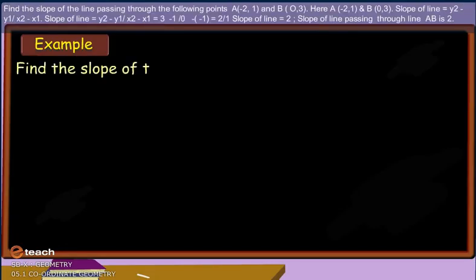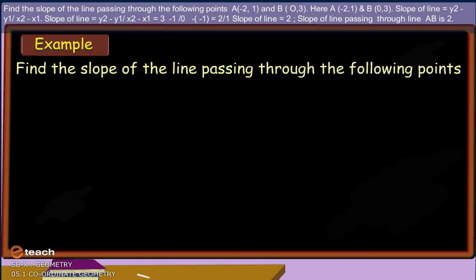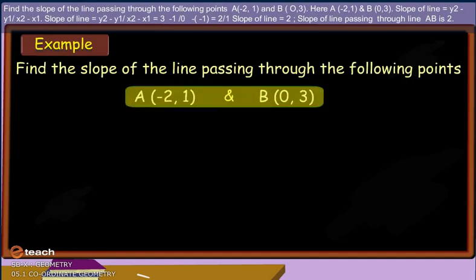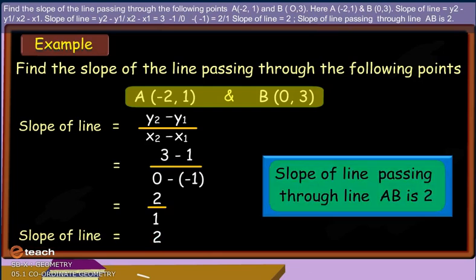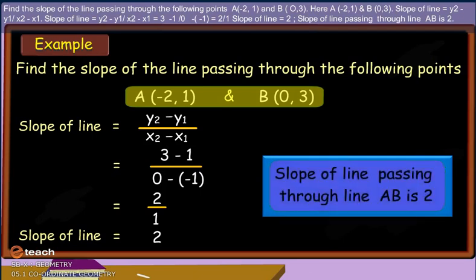Find the slope of the line passing through the following points: Point A(−2, 1) and Point B(0, 3). Here, A(−2, 1) and B(0, 3). Slope of line = (y2 − y1) / (x2 − x1) = (3 − 1) / (0 − (−2)) = 2 / 2 = 1. Wait — slope of line equals 2. The slope of the line passing through A and B is 2.